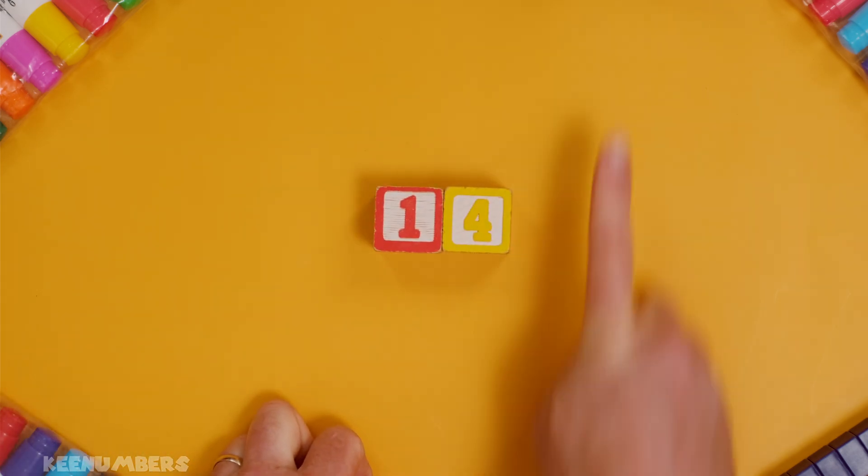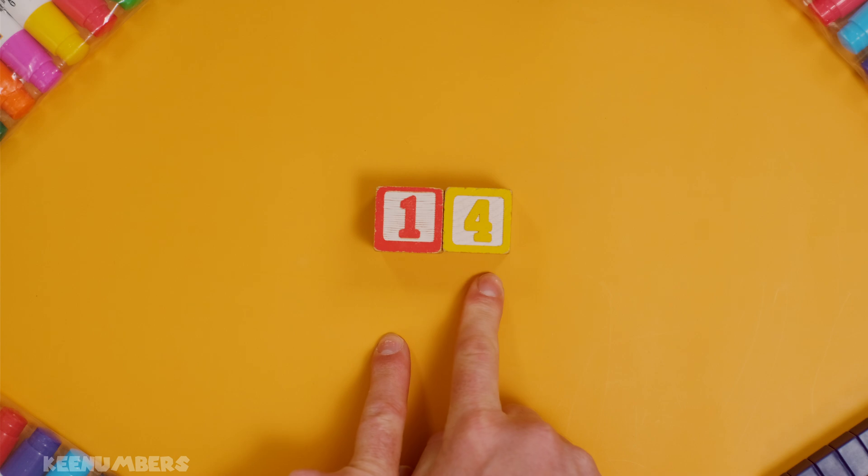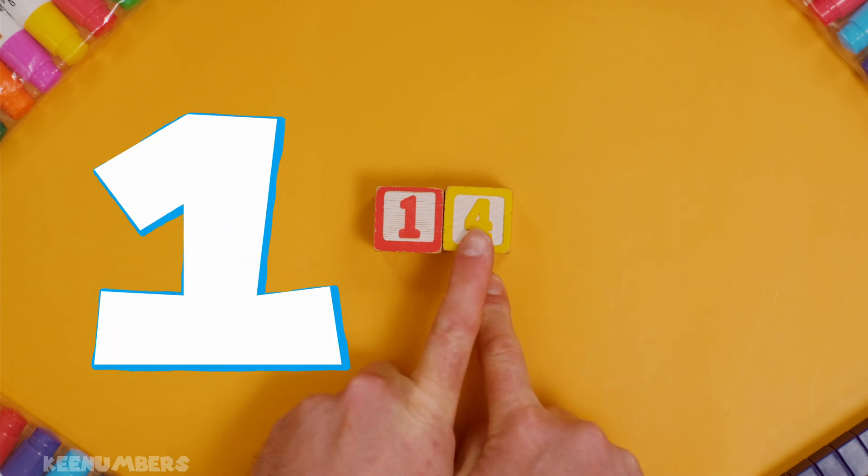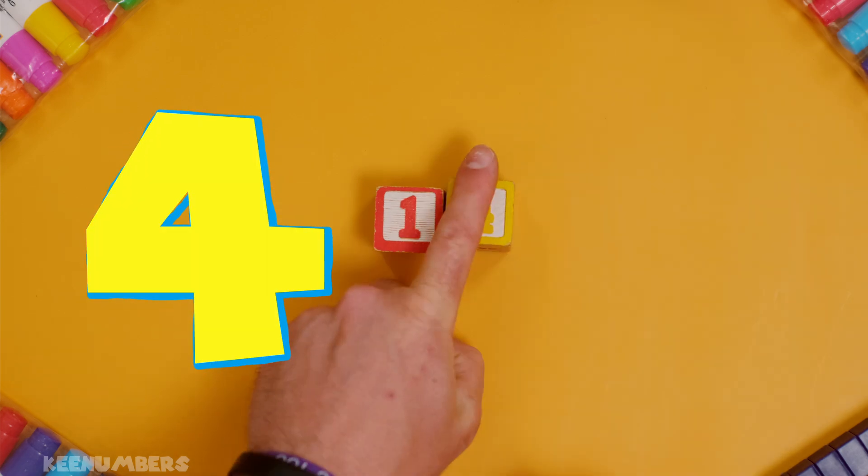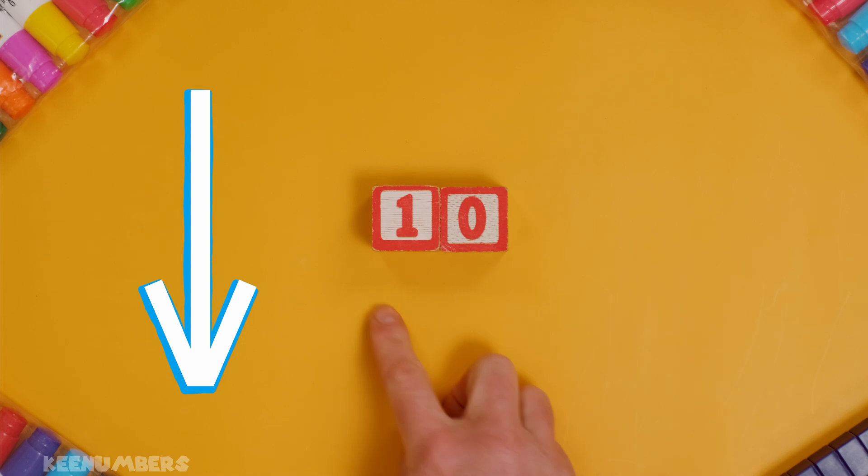Fourteen. Do we round up, or do we round down? Well, you look to the digit to the right. It ends in one, two, three, or four. So, we're going to round down to ten.